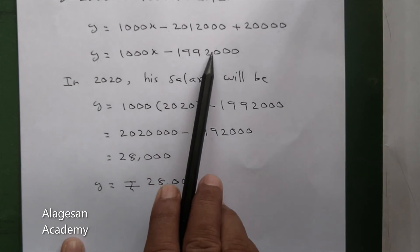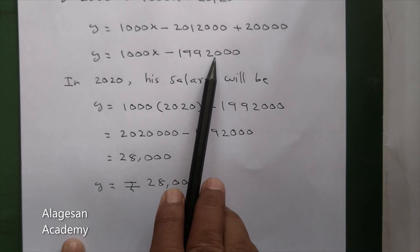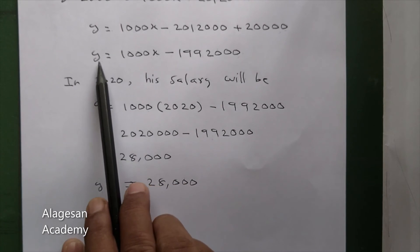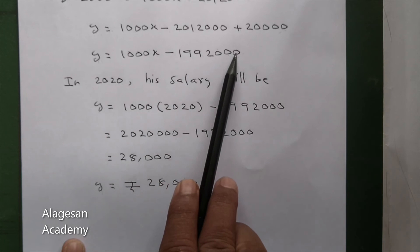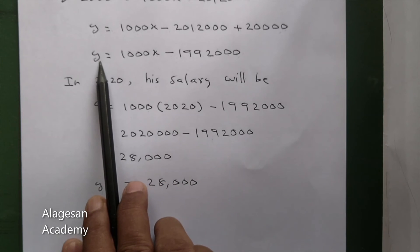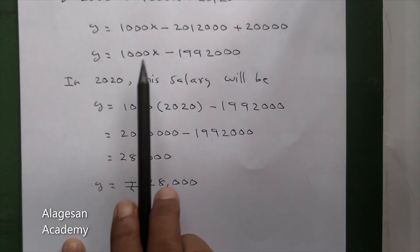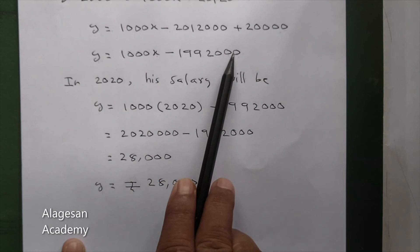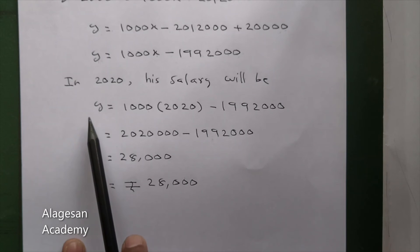So this is the linear expression representing the given data. The first question is this: y equal to 1000x minus 1992,000. This gives the relation between x and y. x is the year, y is the salary.